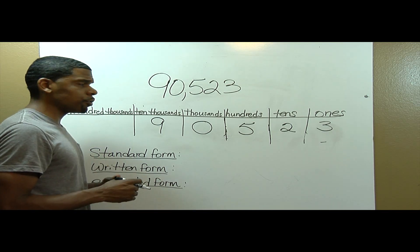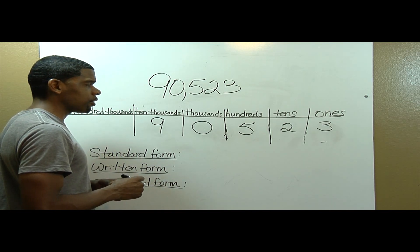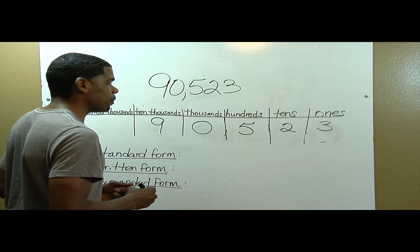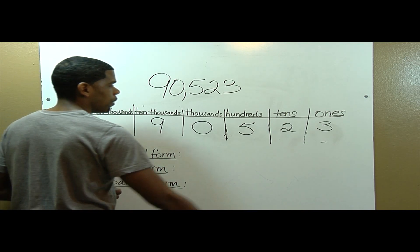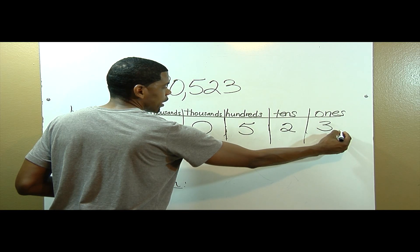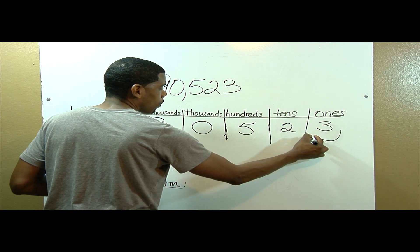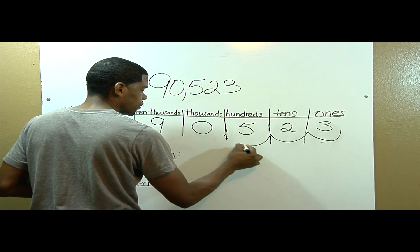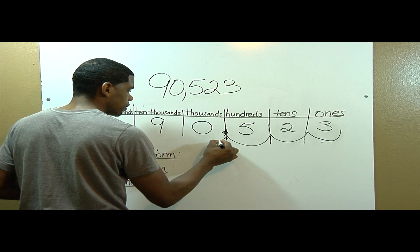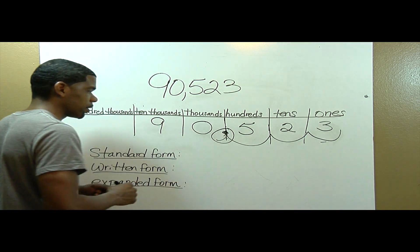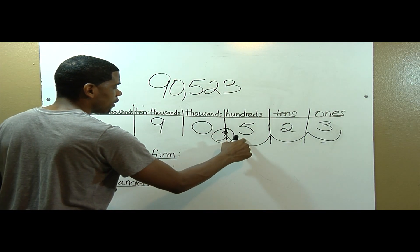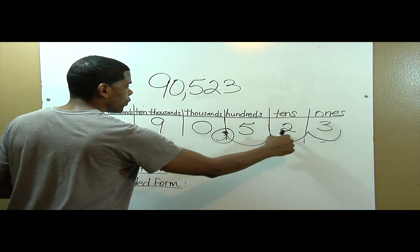The next thing I need to do in my place value chart is figure out where my comma goes. I will start from right to left and move over three places — one, two, three. And this is where I'll write my comma. So now I have ninety thousand five hundred twenty-three.